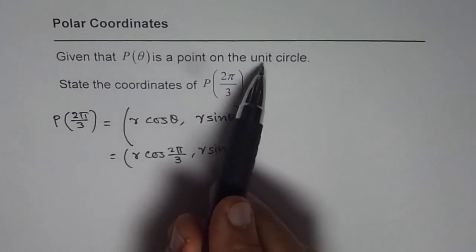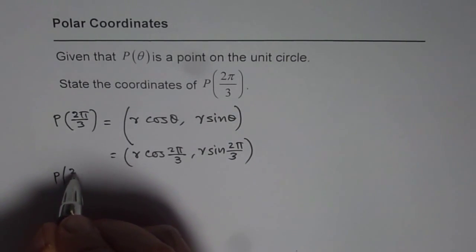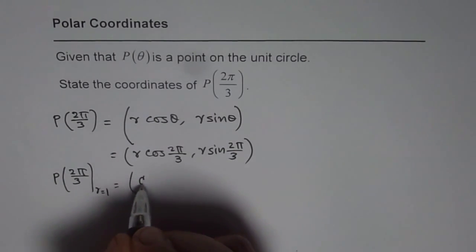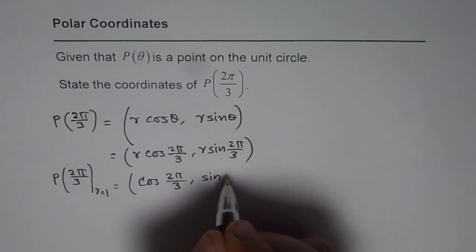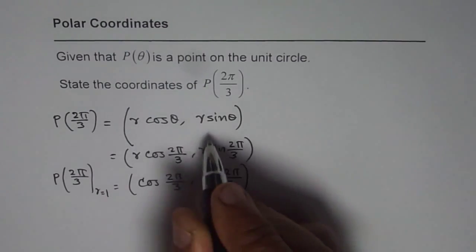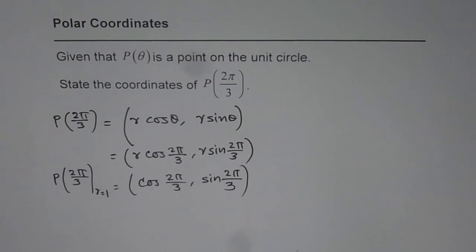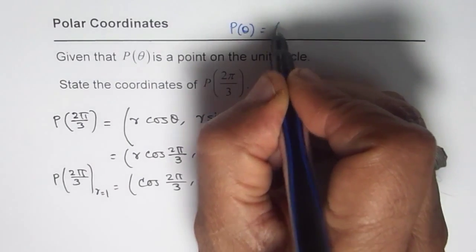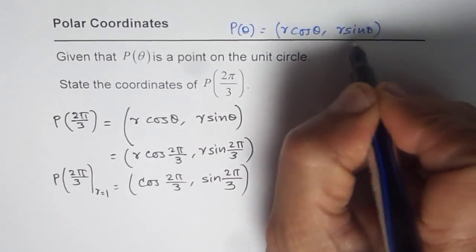We are also given a unit circle, which means r is 1. Since we want coordinates for the point where r equals 1, substituting r as 1, we get cos(2π/3) and sine(2π/3). All these steps are not really required — you can straight away write the last statement. Basically, when you say P of theta, we write it as r cos theta, r sine theta as the polar coordinate.